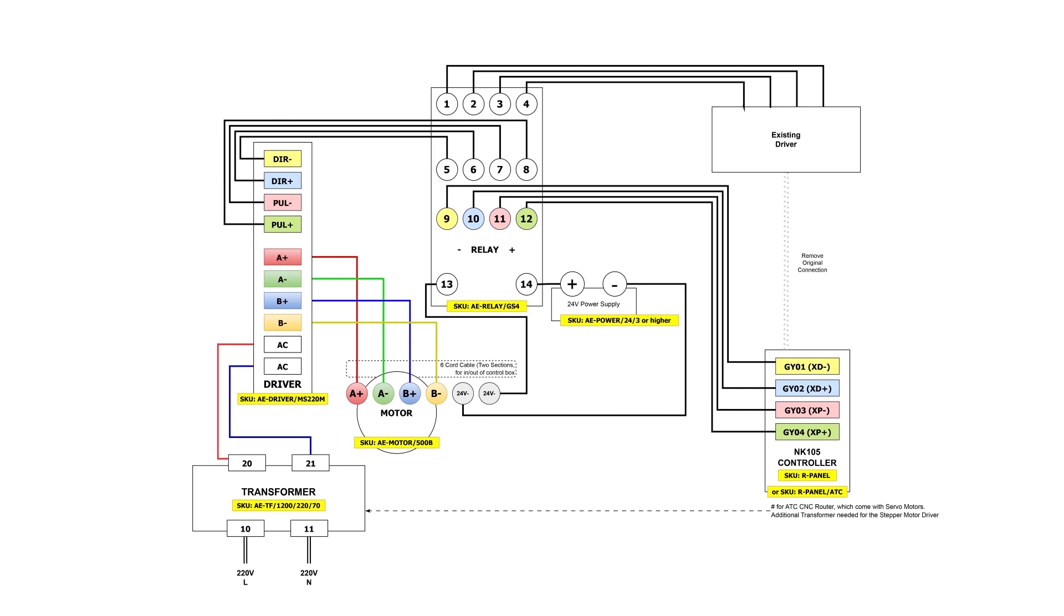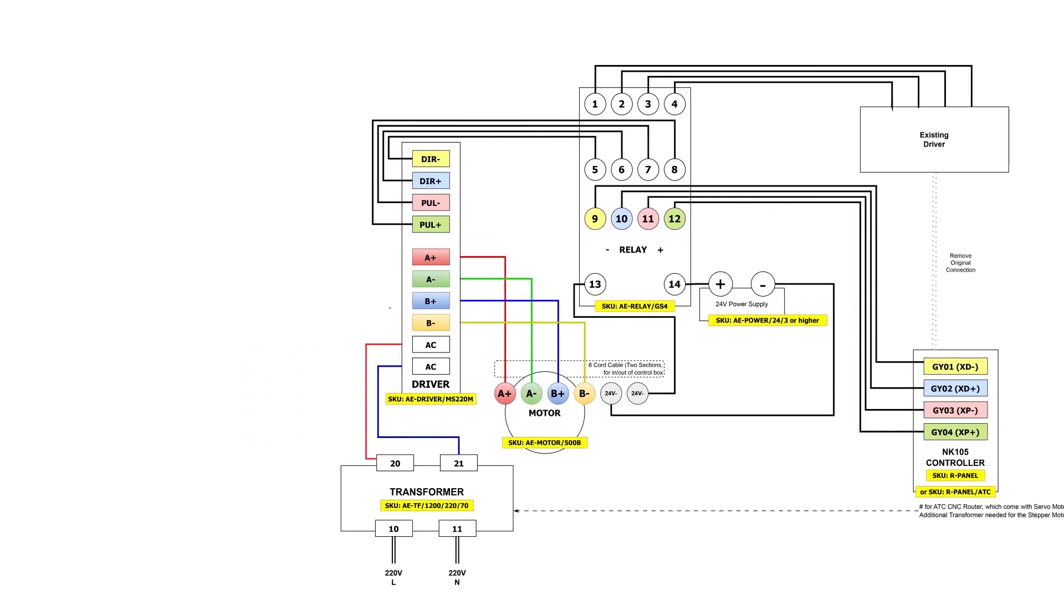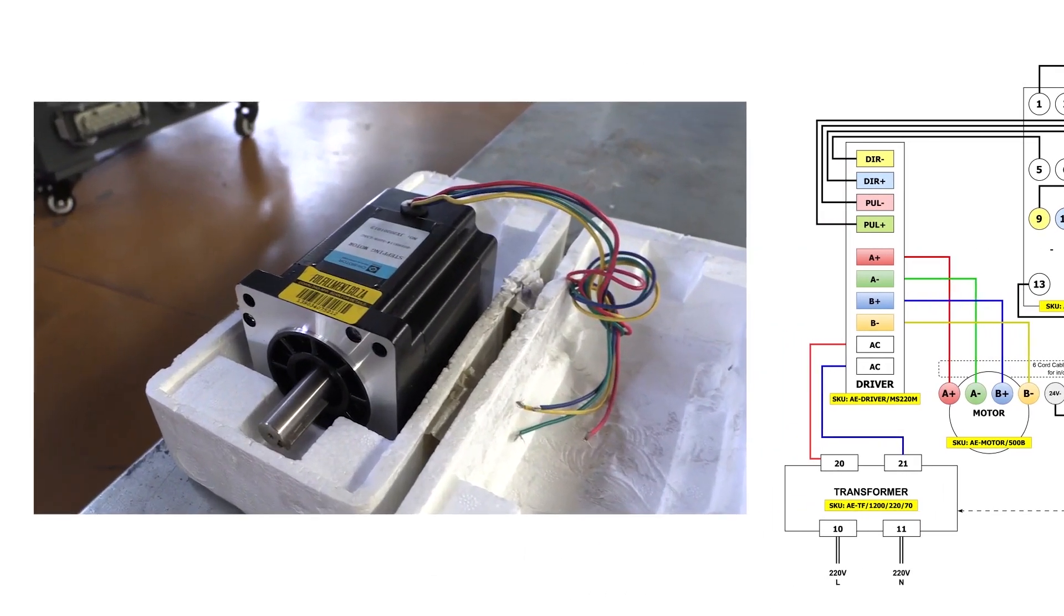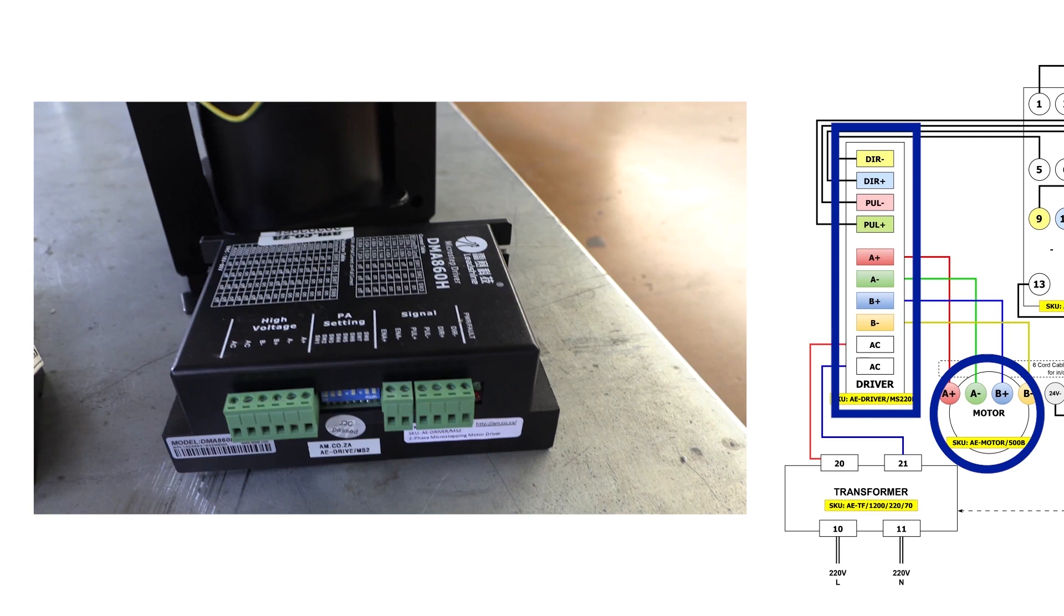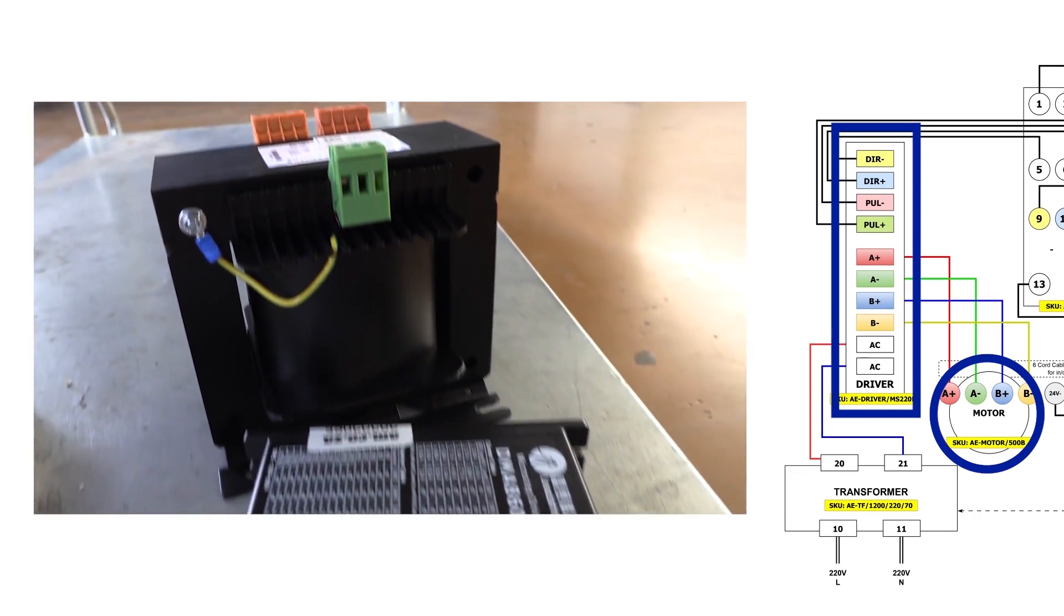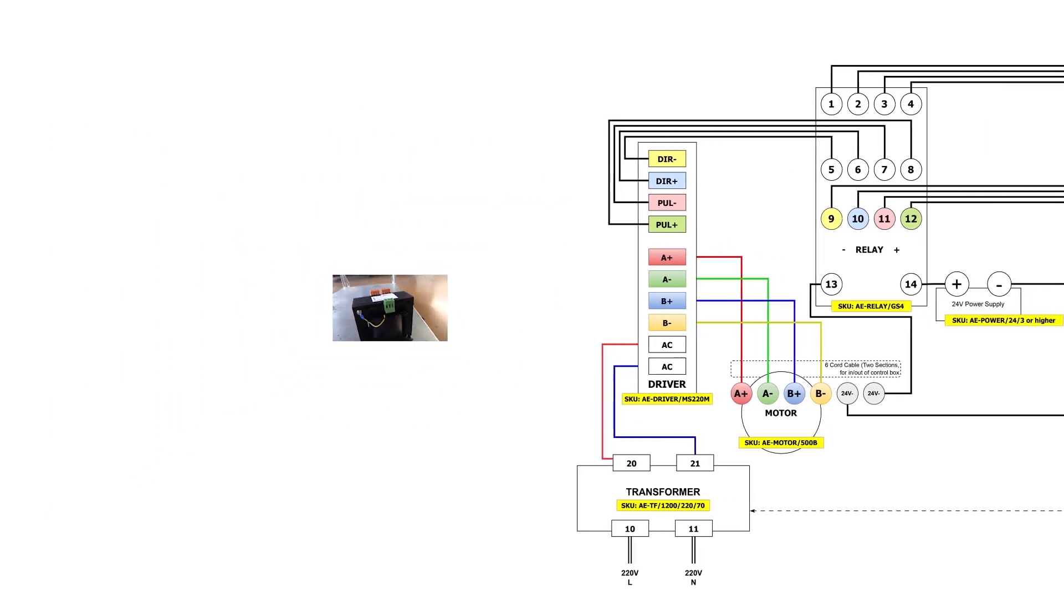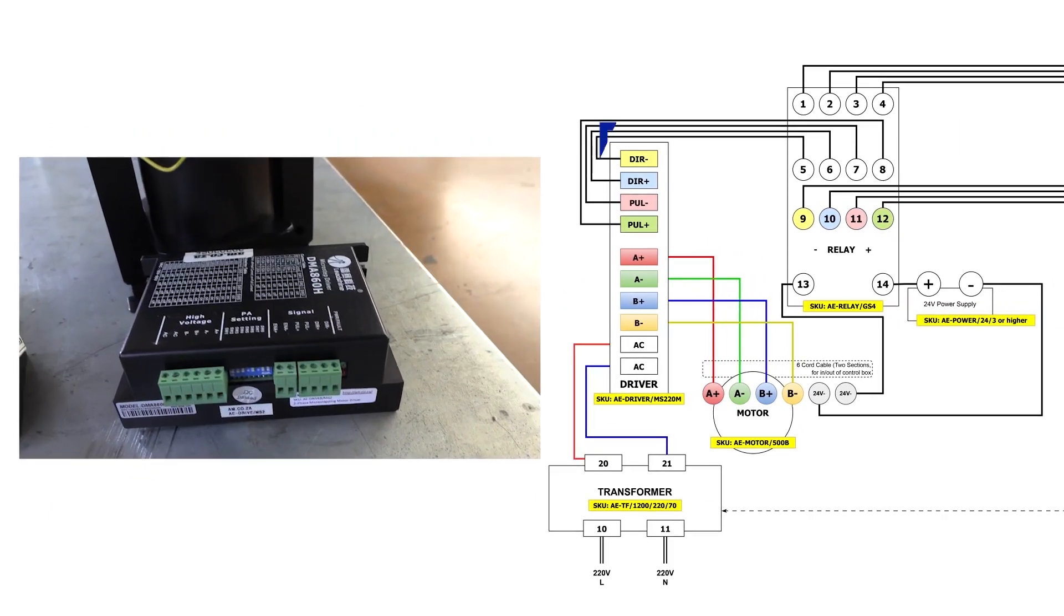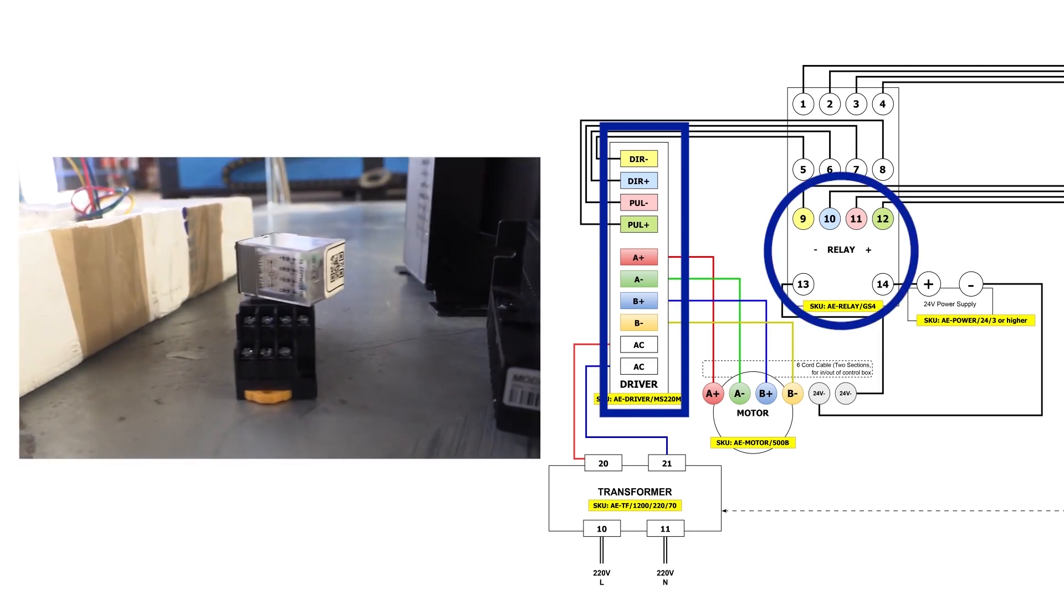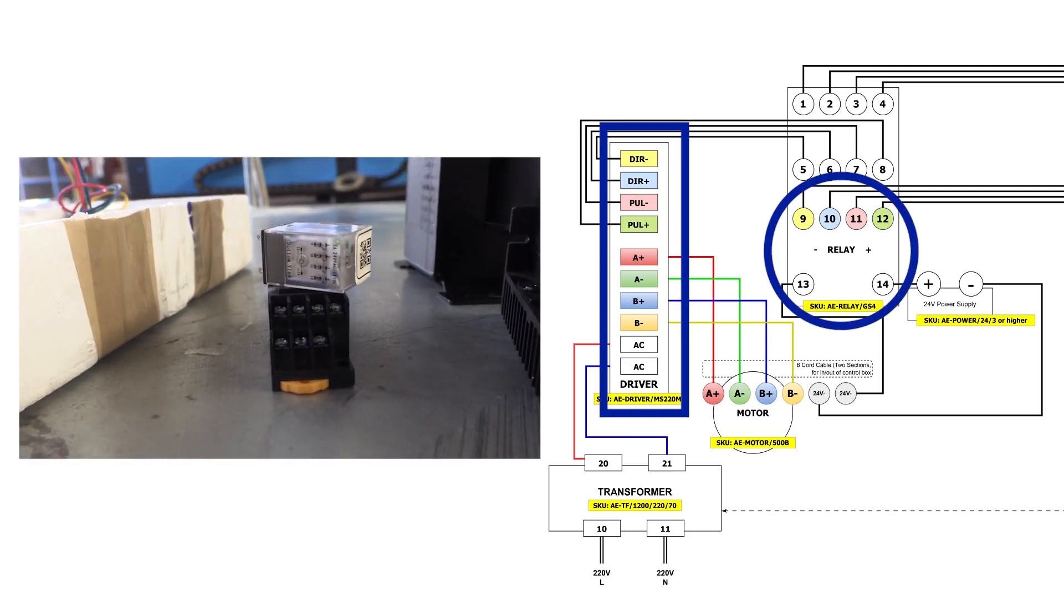to show you is with a schematic diagram. To start with, you need to join the motor to the driver and the driver to the transformer. Then you need to join the driver to the relay and the relay to the controller.